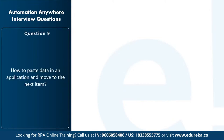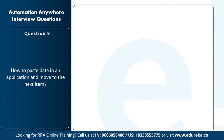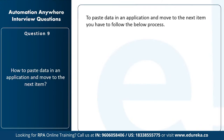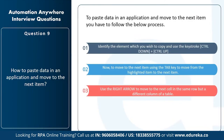The next question is: how to paste data in an application and move to the next item? First, identify the element you wish to copy and use the keystroke Ctrl+Down plus Ctrl+Right. Then move to the next item using the Tab key to move from the highlighted item to the next. Finally, use the right arrow to move to the next cell in the same row but a different column of a table. Note that some applications also support using the spacebar to move to the next control or button.